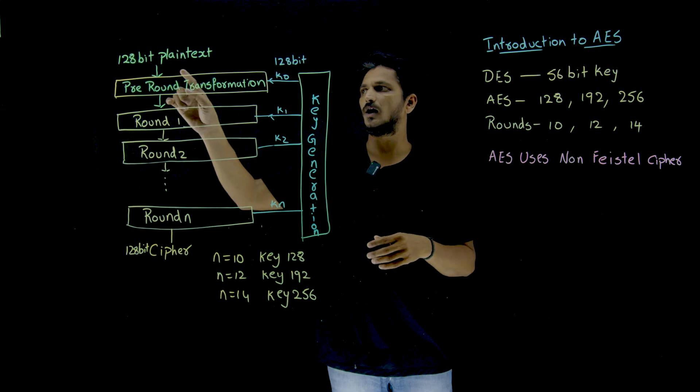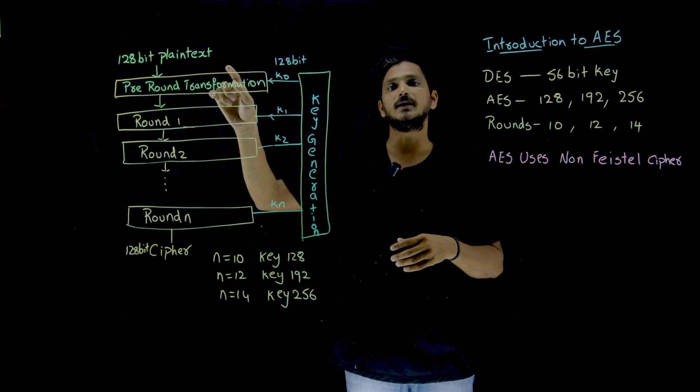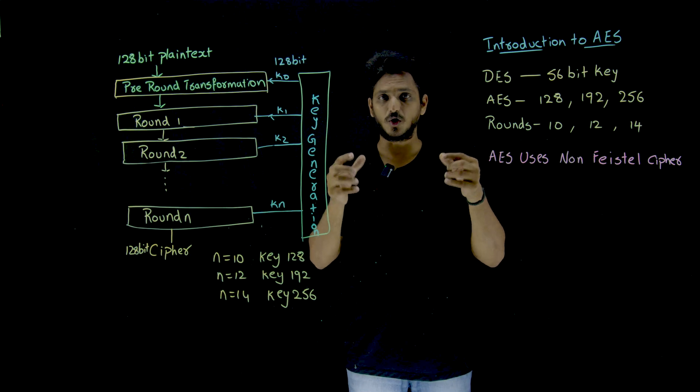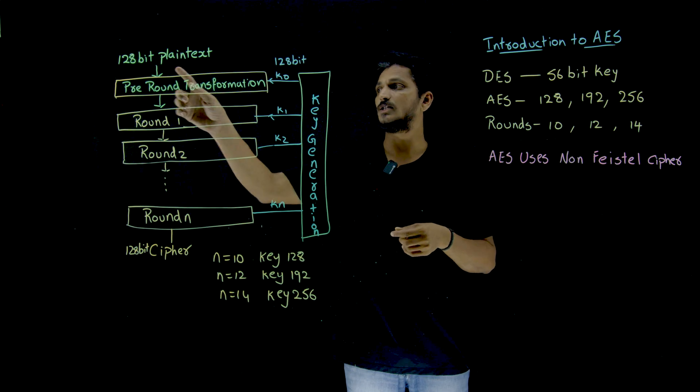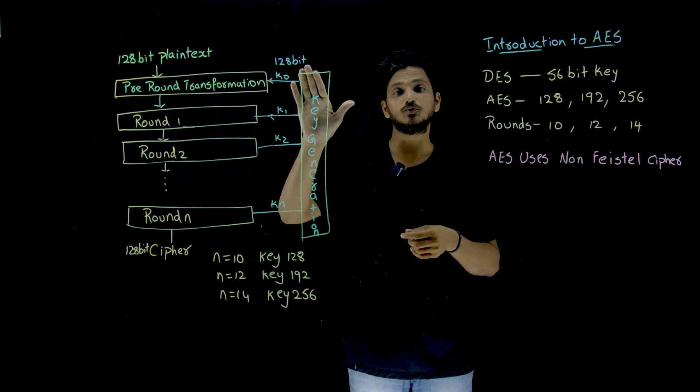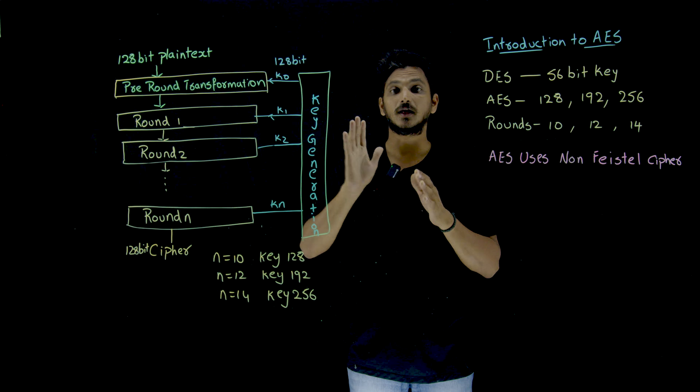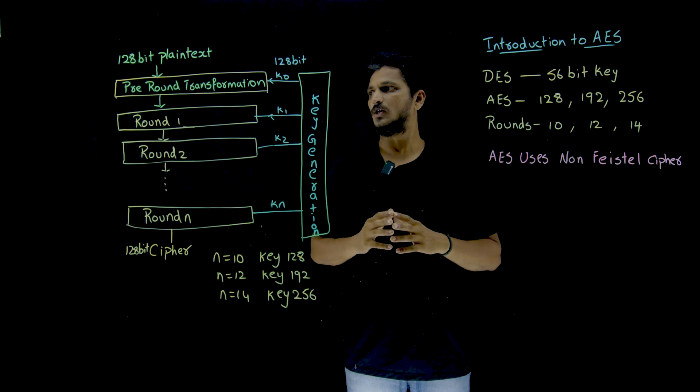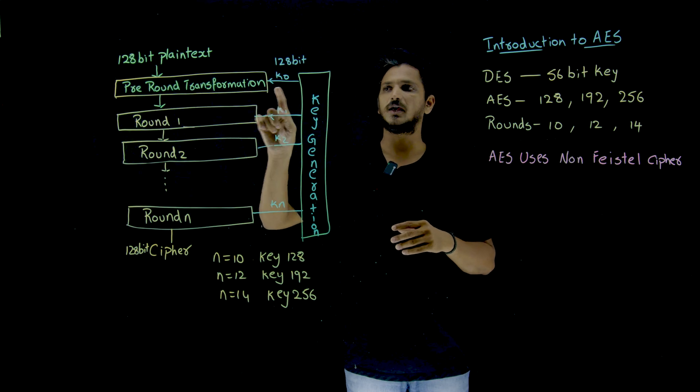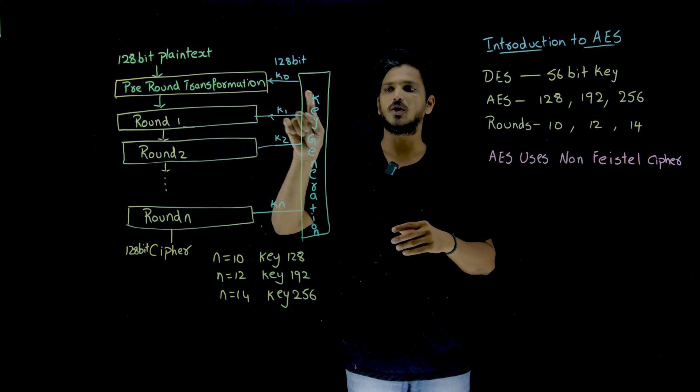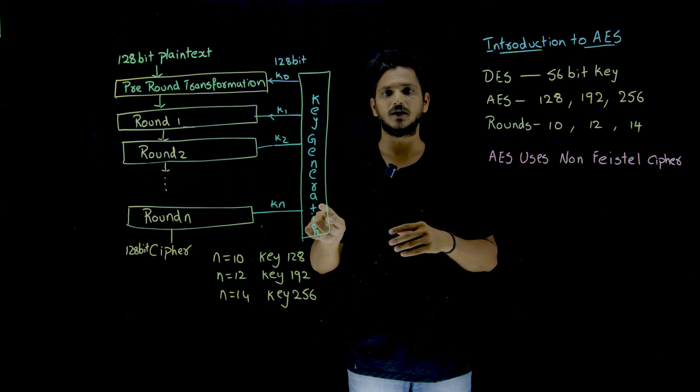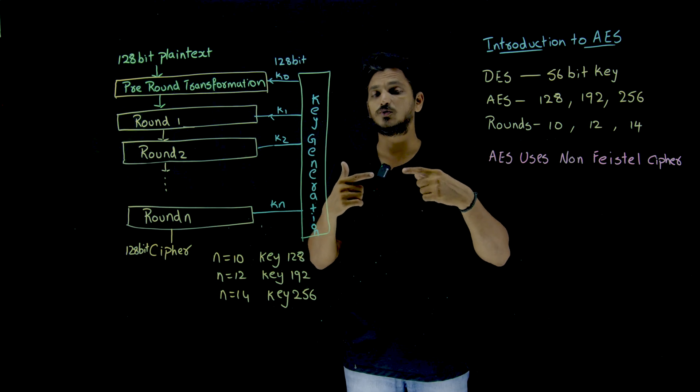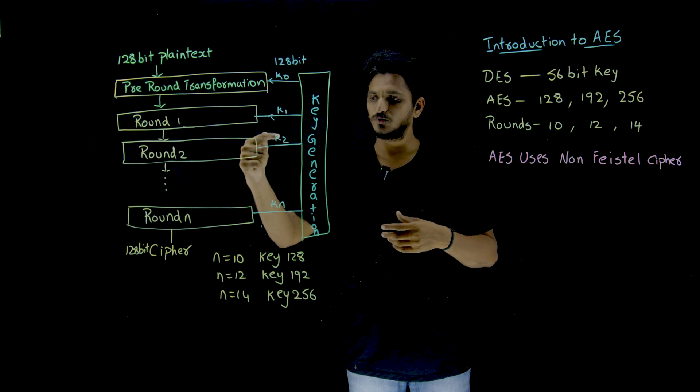So in this AES, we are having 128-bit plain text. This is also block cipher technique, means we divide the data into blocks and each block contains 128-bit plain text and we are going to use 128-bit key. There are different versions in AES. At the end, we are going to understand what is that version. So the first round is pre-round transformation. There, the key is used K0. Key generation algorithm will be defined here. This key generation algorithm is going to identify multiple keys according to the rounds.